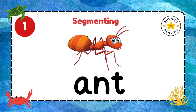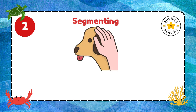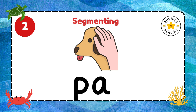Can you spell pat? Stretch the word. Pat. What is the first sound? P. Write it quickly. What do you hear next? A. A is the next sound. Can you write it?